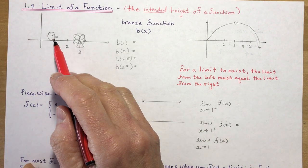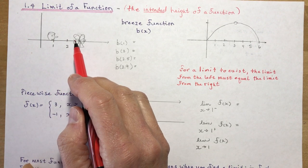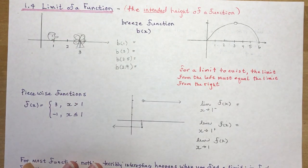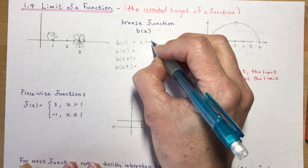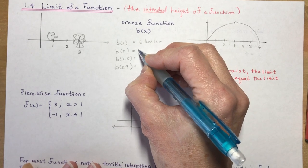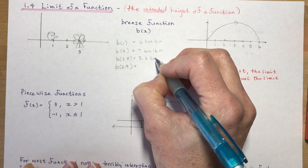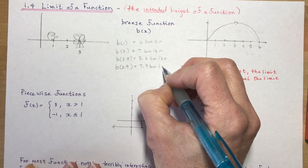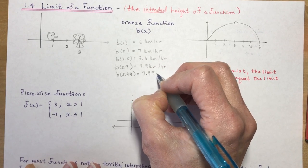Let's say we have a guy with a really long nose getting closer and closer to a fan. We're going to talk about the breeze function — how much wind is he getting as he gets closer to this fan. At x=1 the speed was 6 km/h; at 2 it was 7; at 2.5 it was 7.6; at 2.9 it was 7.9; at 2.99 it was 7.99 km/h.